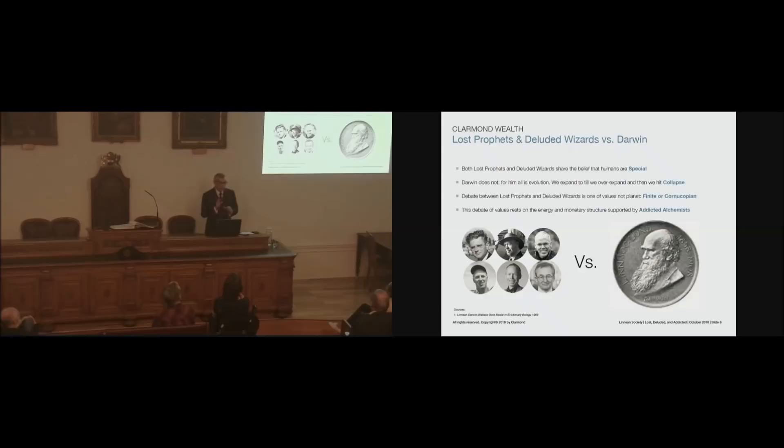So the addicted alchemists, why are they important? Because the debate of values of this side between both the Deluded Wizards and the lost prophets against Darwin, by the way, that's a picture of the Linnean gold medal, which I discovered during the research. The first one, this is a picture of the 1908 gold medal, first time it was given out to Henry Wallace. The debate here is which of these values is critical, and the answer is neither, because it's the addicted alchemists and the way they maintain the energy and monetary infrastructures call the shots.